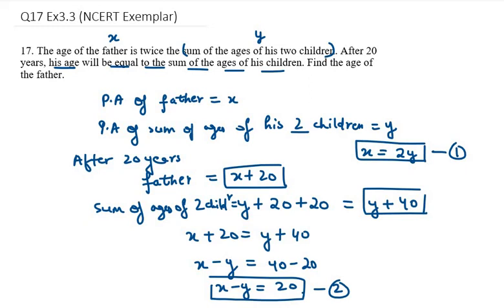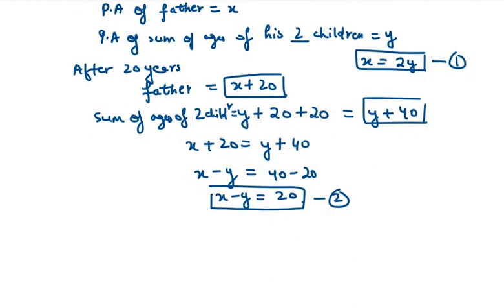I will substitute the value of x equals 2y in equation 2. So it will be 2y minus y equals 20. So 2y minus y is y equals 20.